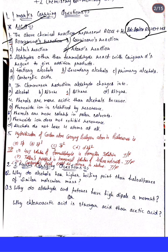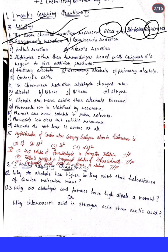Second MCQ: an aldehyde other than formaldehyde reacts with a Grignard reagent to give an addition product. Options are: (a) tertiary alcohol, (b) secondary alcohol, (c) primary alcohol, (d) carboxylic acid. The correct answer is secondary alcohol.